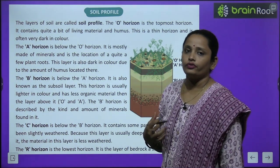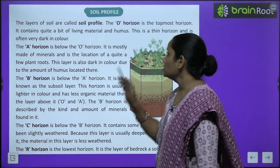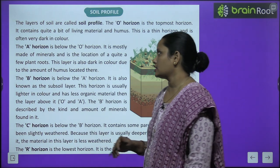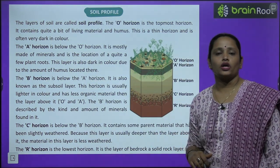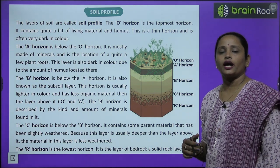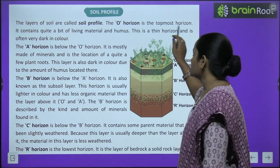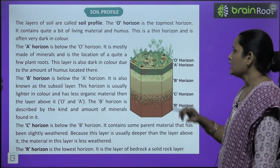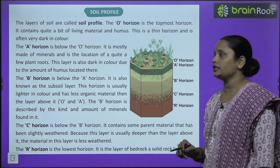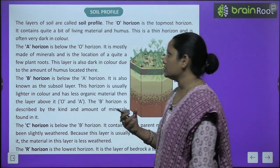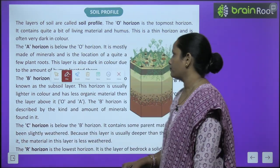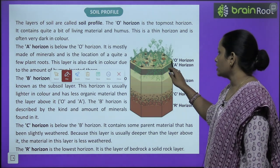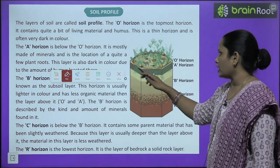So those were the different layers of soil. Next comes soil profile — soil kis kis level mein kaisa kaisa dikhta hai. The layers of soil are called soil profile. The O horizon is the topmost horizon, and it contains quite a bit of living materials and humus. This is a thin horizon and is often very dark in color.